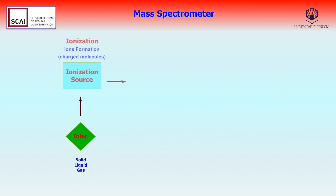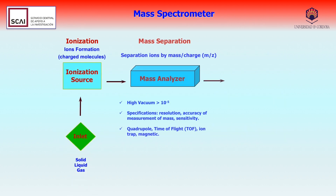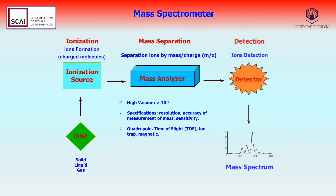Mass spectrometers have three different parts. Firstly, ions are produced at the ionization source and then separated in the analyzer. Finally, the detector will identify and quantify the ions.